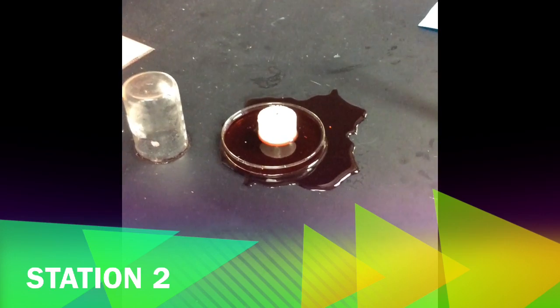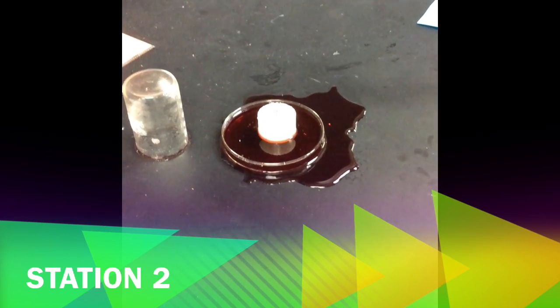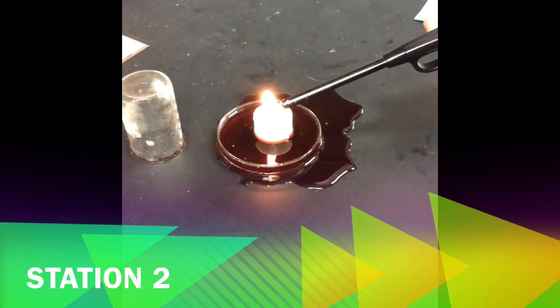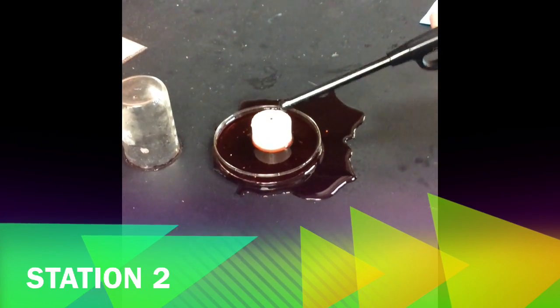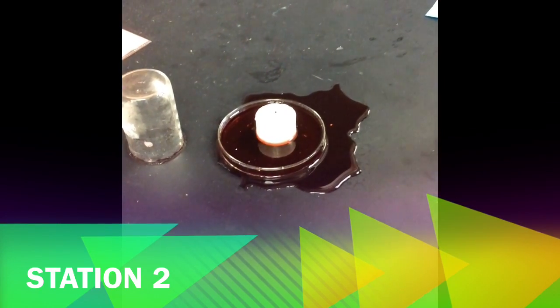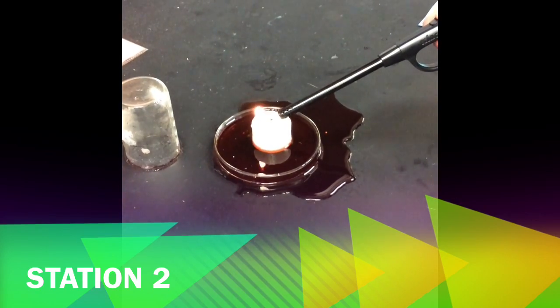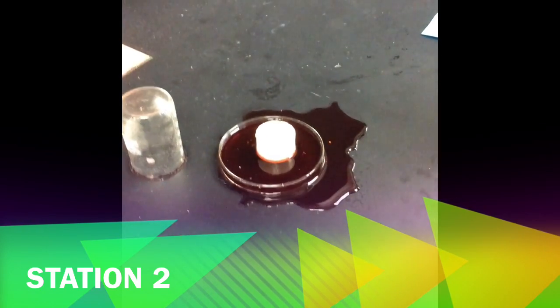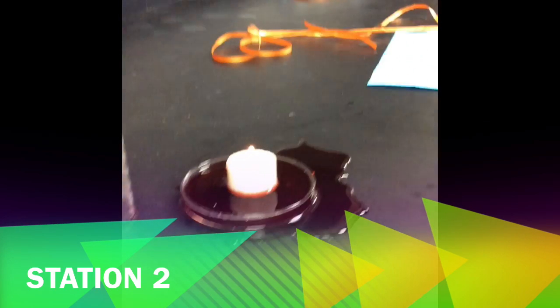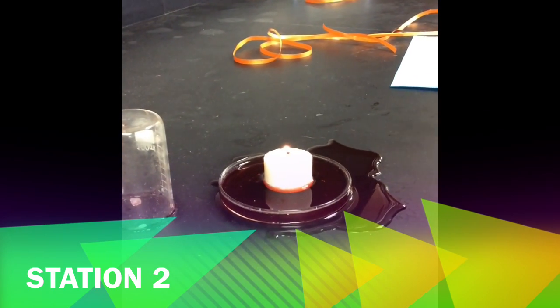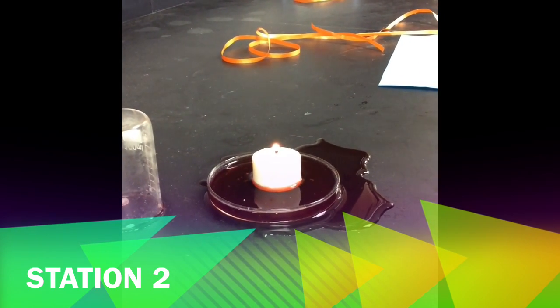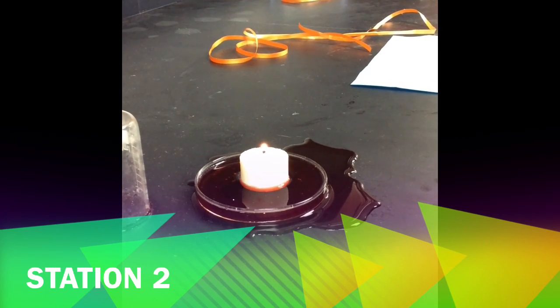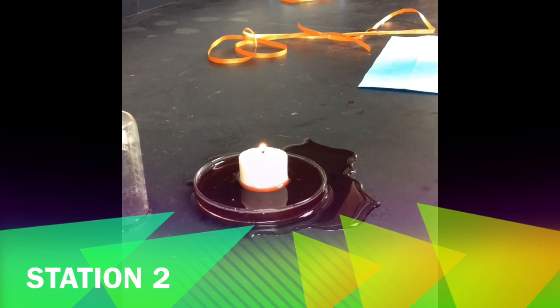At station two we've got this candle here and we're going to light it on fire. We're gonna let it burn for a few seconds before we do the second part. Now think about what's happening to the air around this candle as it gets hot.